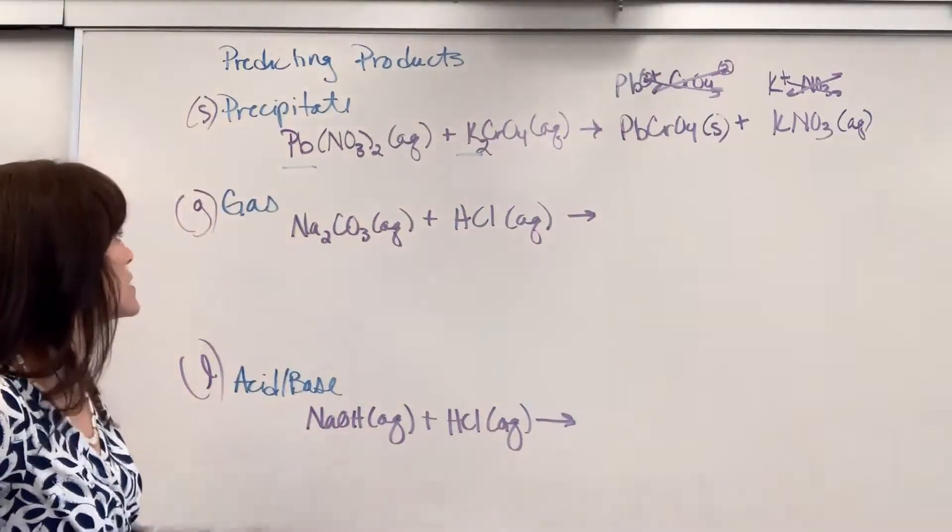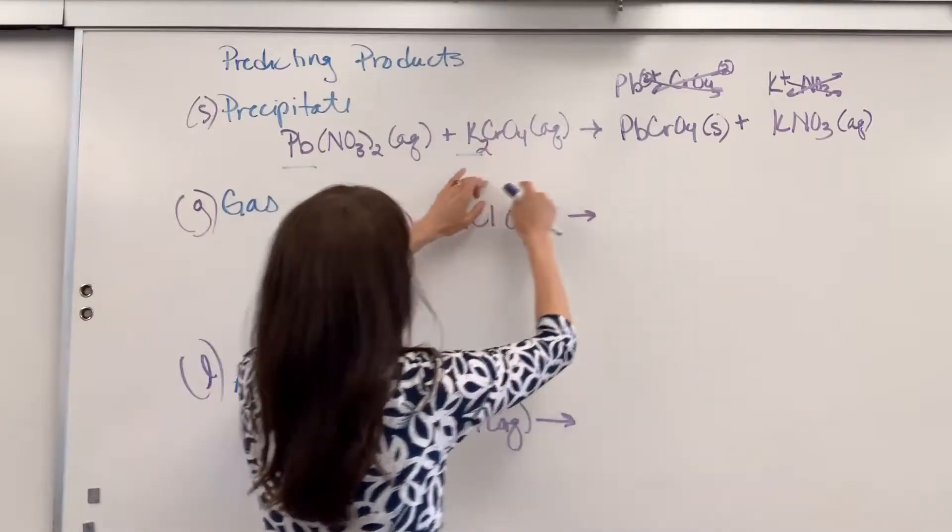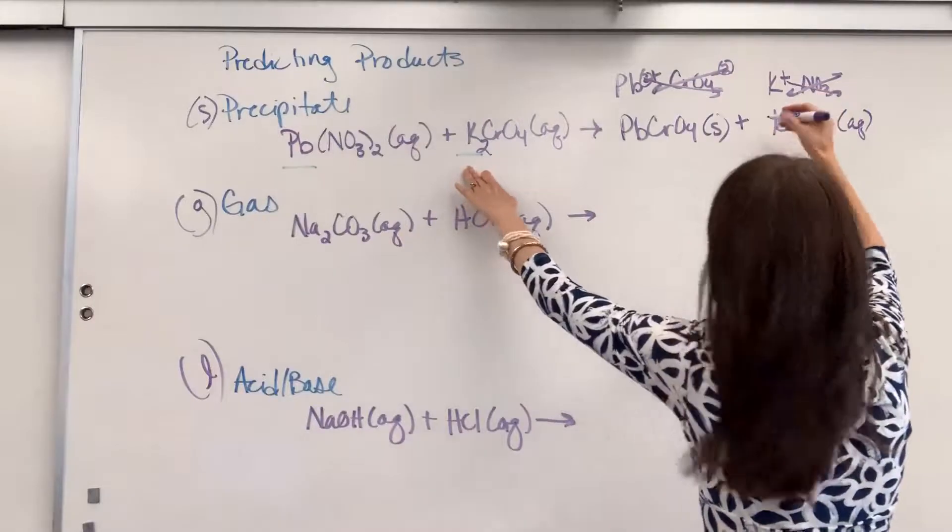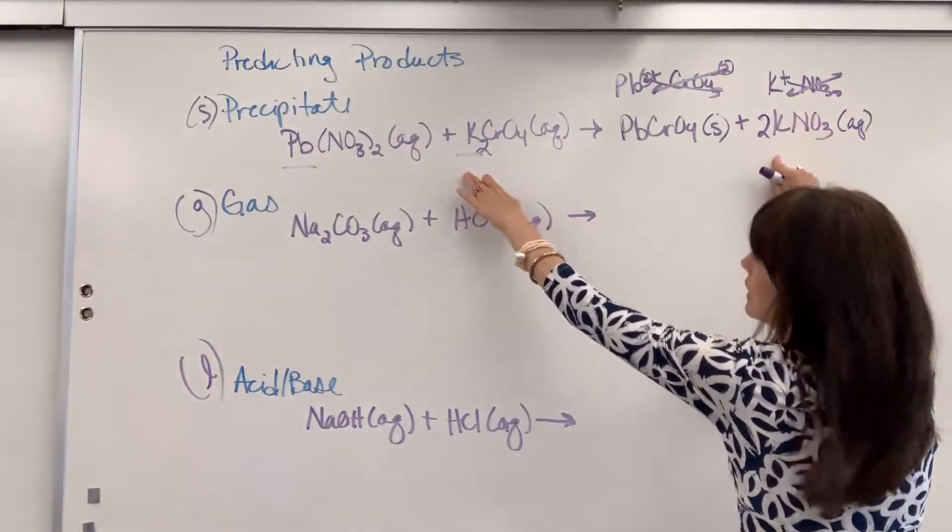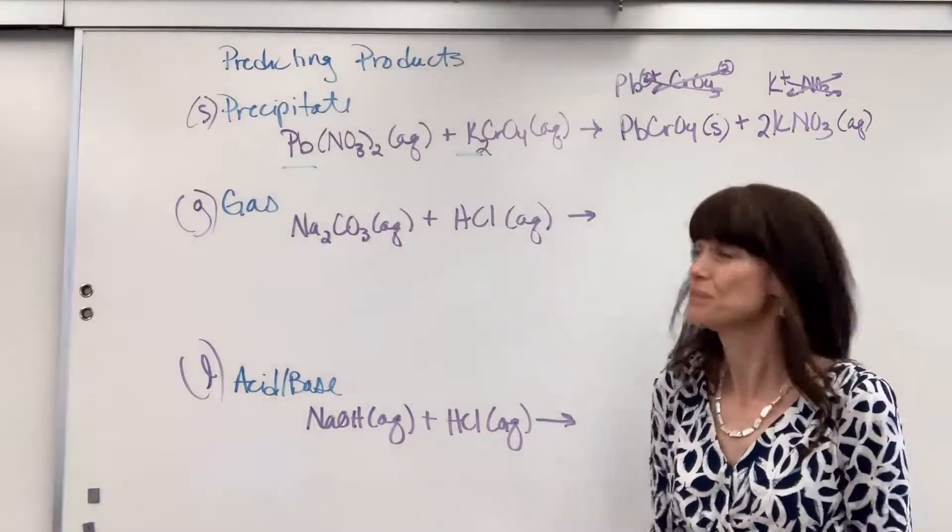Let's go back and balance the atoms. I've got one lead, one lead, one chromate, one chromate, two potassium. Check it out. One potassium. So, we can put a two right here. Now, I have two nitrate, two nitrate. We are balanced.